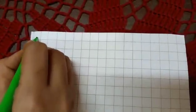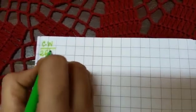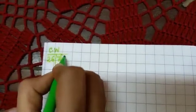And now start writing. Here in the left side of your copy, you will write CW date. Today's date is twenty-six, seven, twenty.